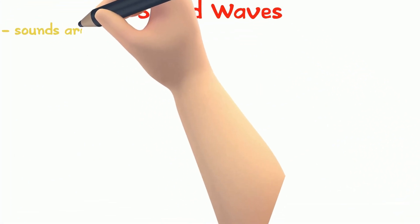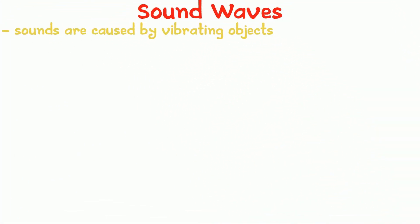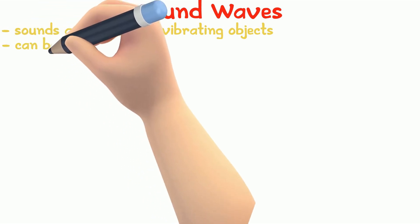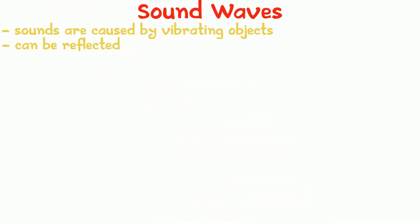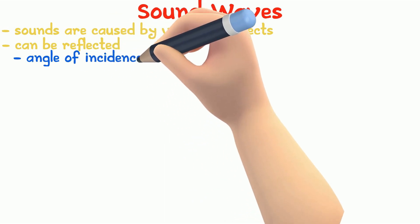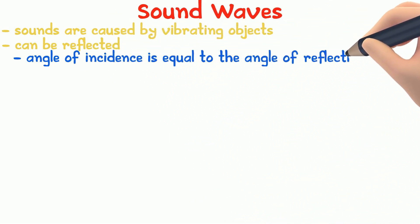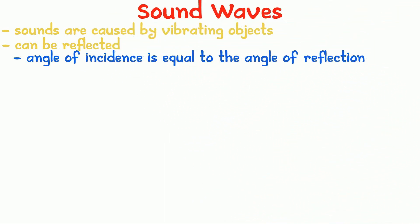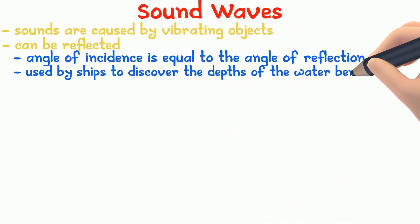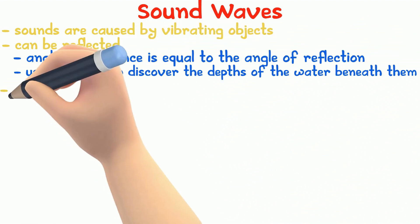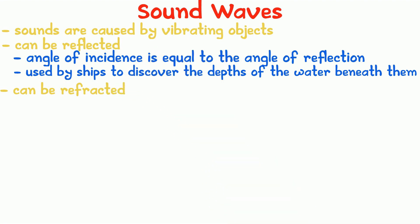Sounds are caused by vibrating objects. When these vibrations reach our ears as sound waves, we can hear sounds. Sound waves, just like all other waves, can be reflected. Just like light waves, when sound waves are reflected, the angle of incidence is equal to the angle of reflection. The reflection of sound waves are used by ships to discover the depth of the water beneath them. Sound waves can be refracted as well. You can't see this, but you can hear it. For example, when you stand at the edge of a lake, you can very clearly hear the sounds due to refraction.